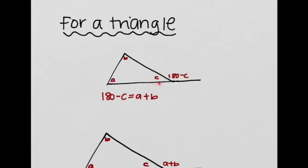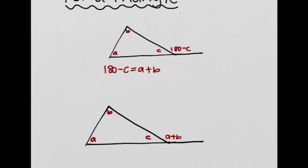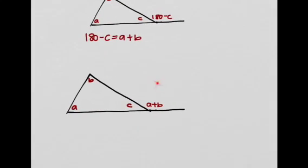But realize that 180 minus c is just equal to a plus b, because this is a triangle, remember? So we can redraw this diagram with this exterior angle being just a plus b.